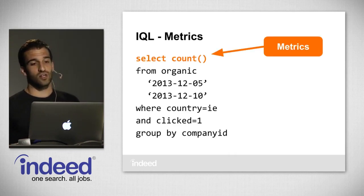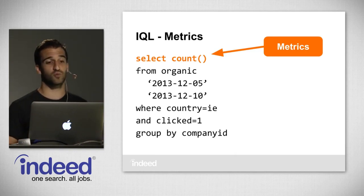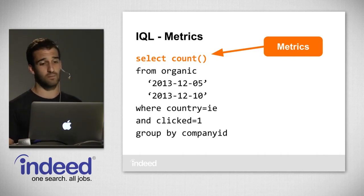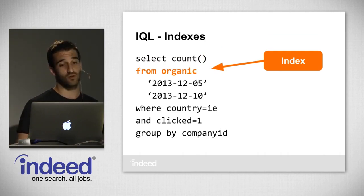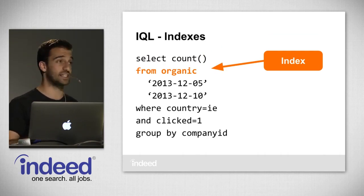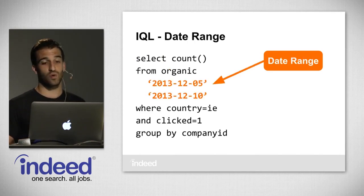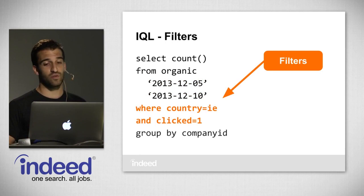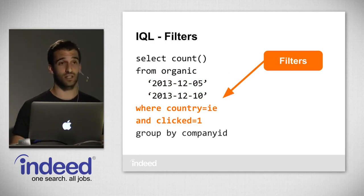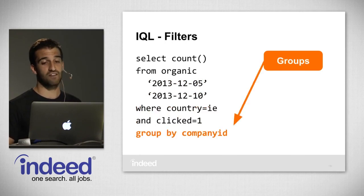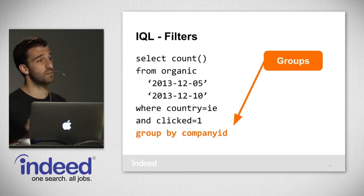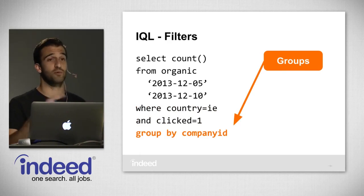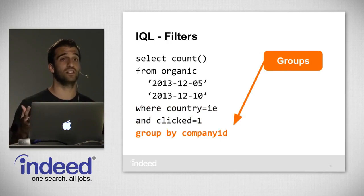Here's what an IQL query looks like. First, we select count — a special metric that counts the number of documents. Then from organic — the Organic Impressions Index. We have a date range: December 5th, 2013 through December 10th, 2013. We've got filters: where country is Ireland and clicked equals one. And finally the groups: grouping by company ID. This is basically the first pivot we did in the organic dataset — looking at companies who received clicks in Ireland.